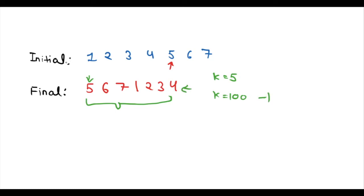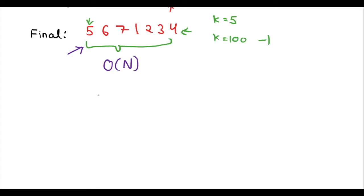Let's see how we can approach this problem. The brute force approach is to iterate over all elements and check whether the element equals K. If it does, we return the index of that element. The complexity of this brute force approach is O(N) because we are iterating over the whole array. So let's see if we can do better than this.